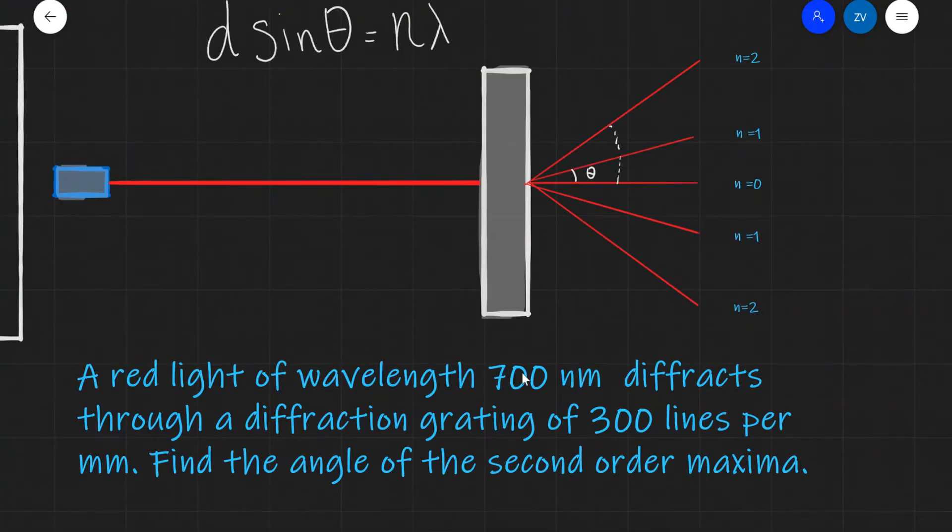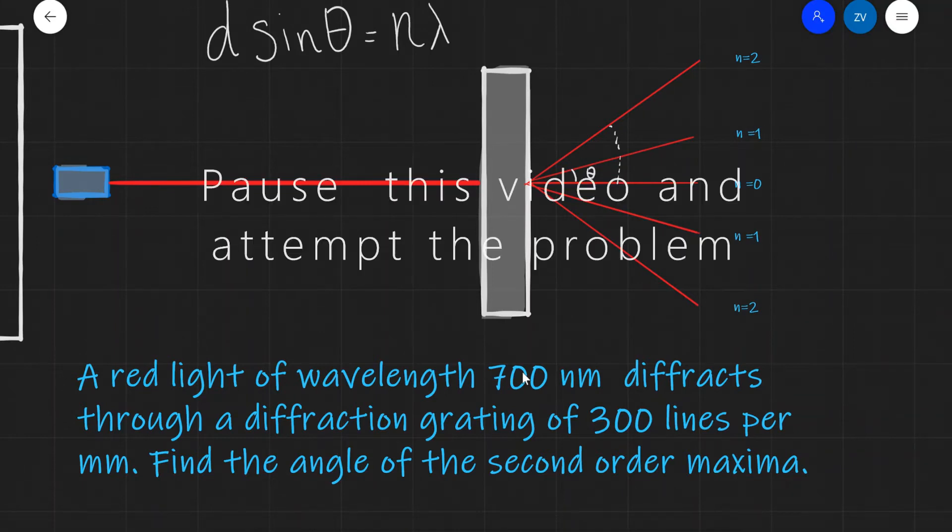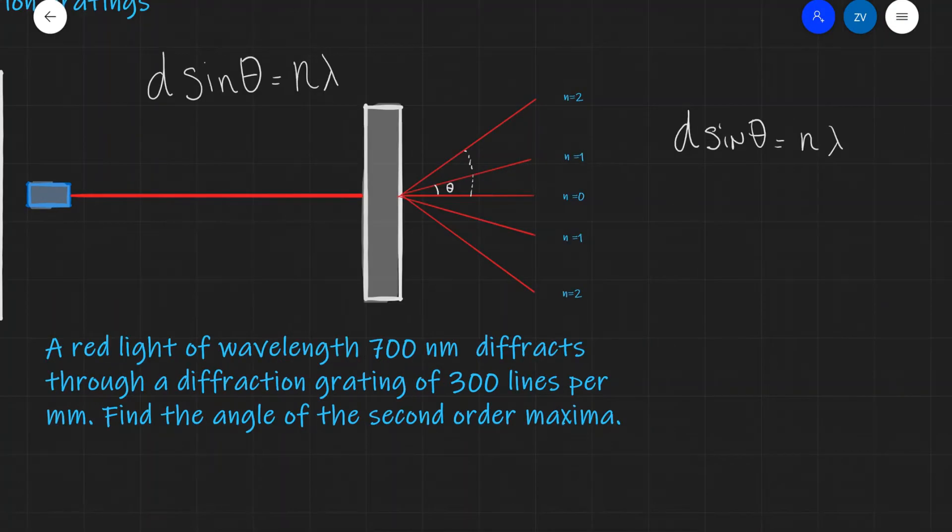Let's see how this equation is applied. This is a perfect opportunity to pause and attempt this problem. The first thing we need to do is write down the diffraction grating equation: d sin θ = n λ.